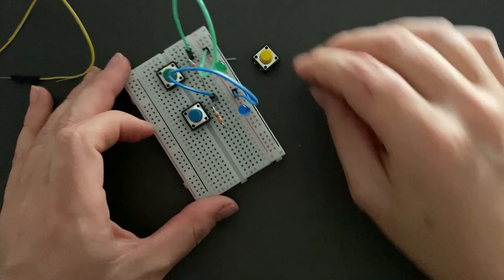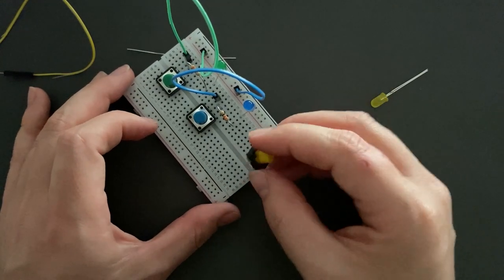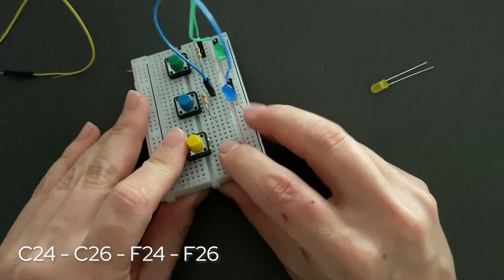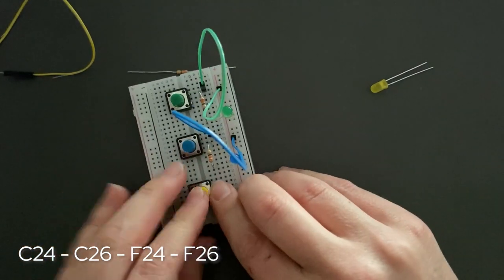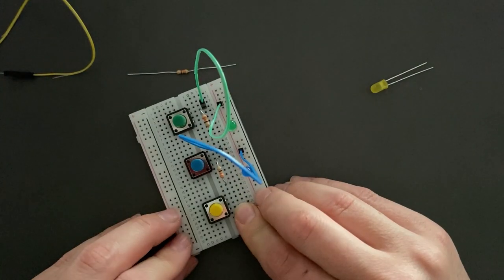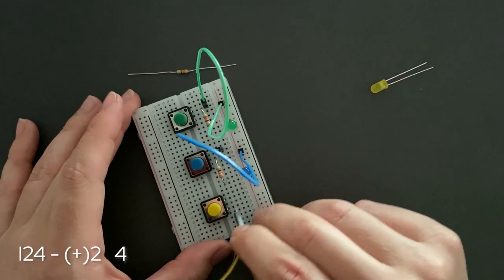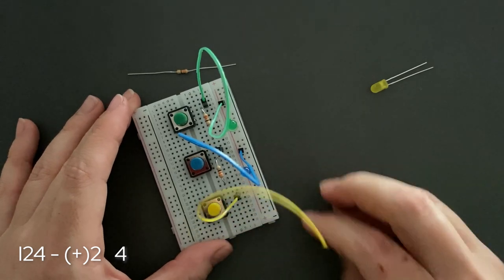Let's go place the third push button so that the pins align with C24, C26, F24, and F26. And then gently press into place. Connect the jumper wire from I24 to positive power rail 24.